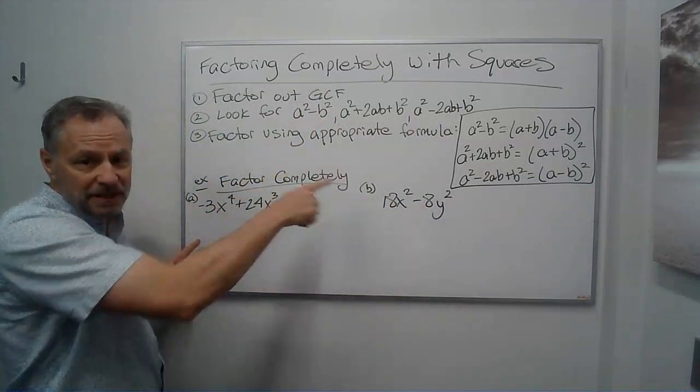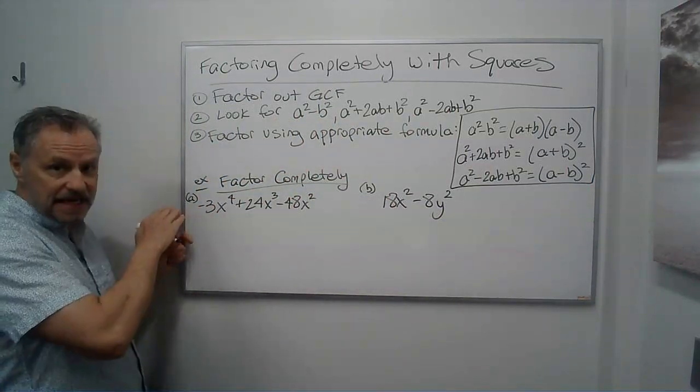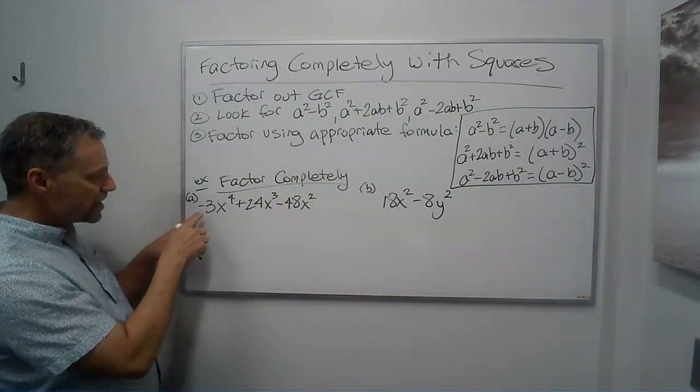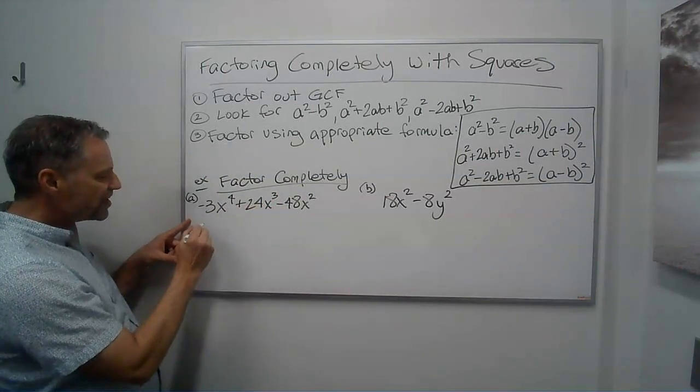Okay, so factor completely. I've got two examples here. First thing again, look for a greatest common factor. Okay, let's see, 3 goes into all these numbers, so I'm going to factor out a 3.